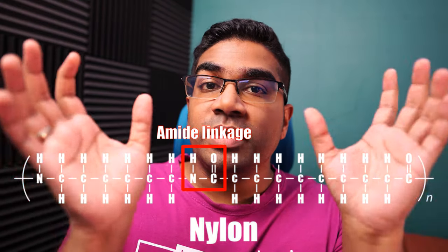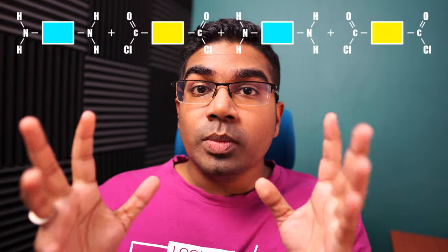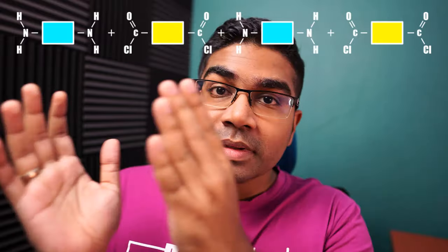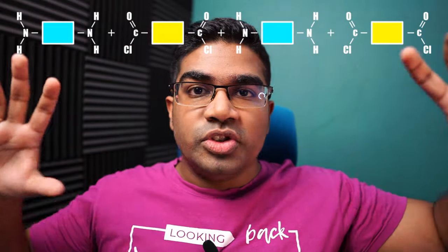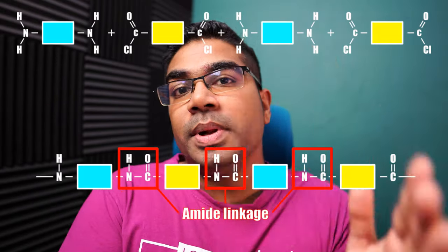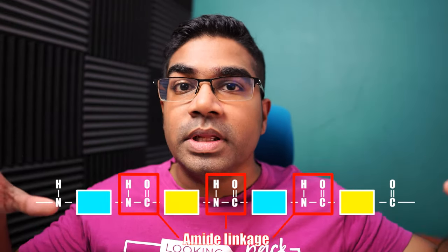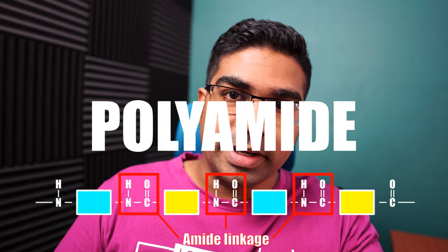Since these structures are very large and complicated, and the only parts of the molecules involved in this reaction are the functional groups, we can simplify the diagram. When we align these two molecules side by side and form a long chain, these functional groups continue to react to produce HCl molecules and result in multiple amide linkages. Therefore, the nylon that is formed is known as a polyamide because it has many amide linkages.